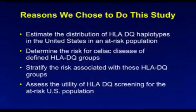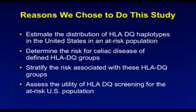Dr. Pizzak, let's begin with why you chose to do this particular study. We wanted to estimate the distribution of some of the genetic haplotypes called HLA-DQ2 and DQ8 in the general population and the at-risk population for celiac disease. We then wanted to determine the risk for celiac disease in these specific HLA-DQ groups, stratify that risk, and ultimately assess whether there is any clinical utility to using genetic testing for celiac disease in an at-risk population.